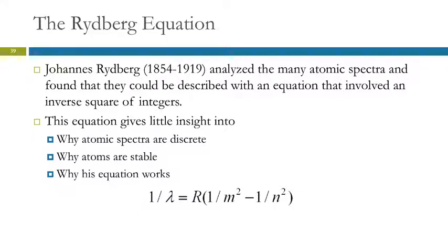So Johannes Rydberg was looking at these atomic spectra and trying to figure out what the relationship was between the lines. And so he came up with an equation which describes the lines and quantifies them, but it doesn't explain why they are like that. So his equation is here: 1 over lambda equals R times the quantity 1 over M squared minus 1 over N squared. So lambda is the wavelength of the line, R is a constant, and M and N are integers. And so he found that you could describe the relationship of these lines based on a couple of integers.